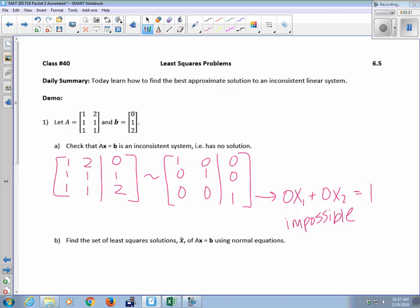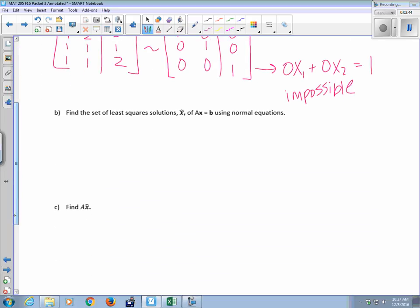There is no X that you can use to make this equation true. So instead, I want to find the least squares solution, an X hat, give it a little hat to be like, it's not the real X, it's the closest thing we can find. It's the X that will get us as close as possible to B, even though we can't get B itself.